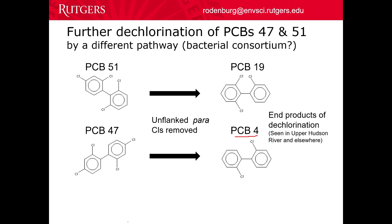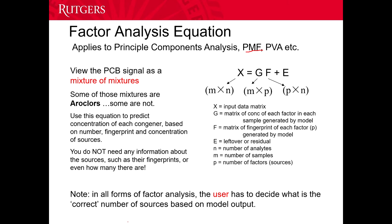The way that I've been investigating this is to use a factor analysis approach called positive matrix factorization, PMF. You can take my class on data mining in the fall and I will teach you all about PMF. But basically, it's deconvoluting the data and looking for patterns — looking for groups of PCB congeners that co-vary, that track along with each other. When PCB 4 is high, PCB 19 is also high.